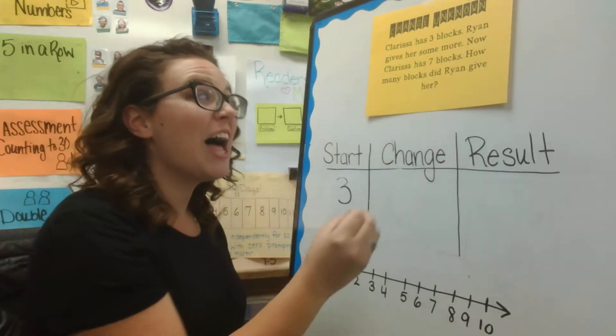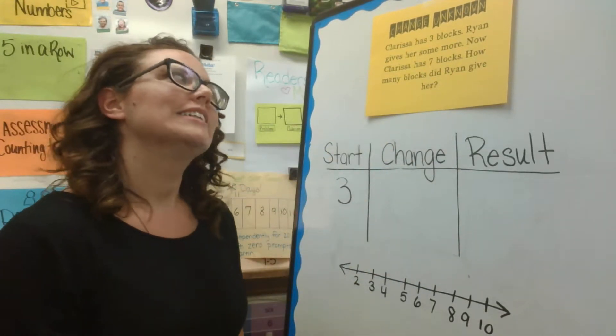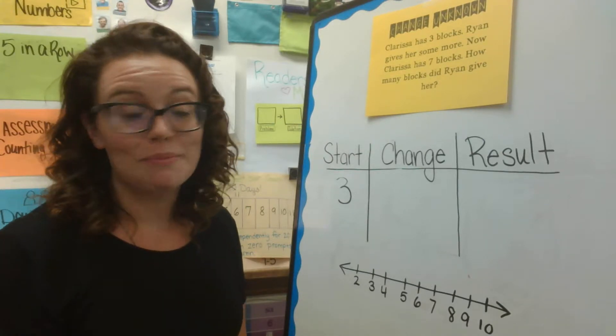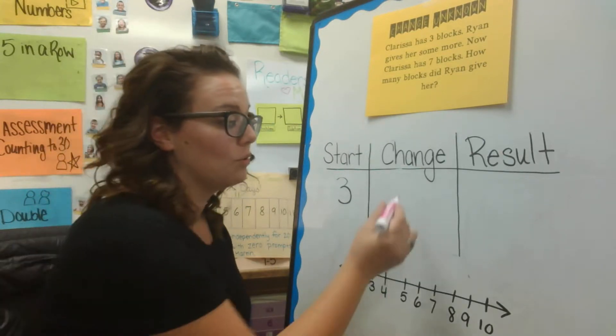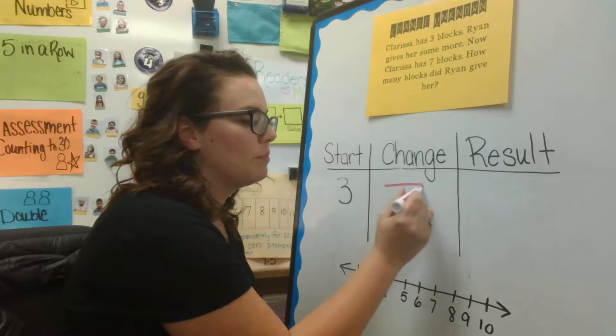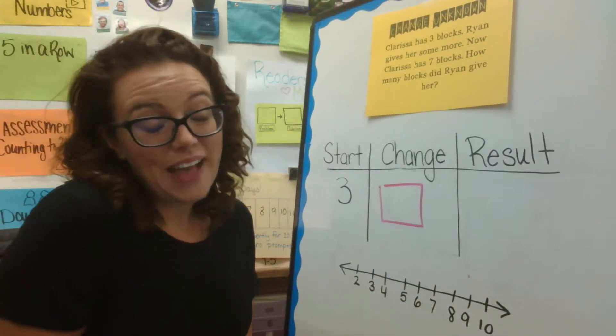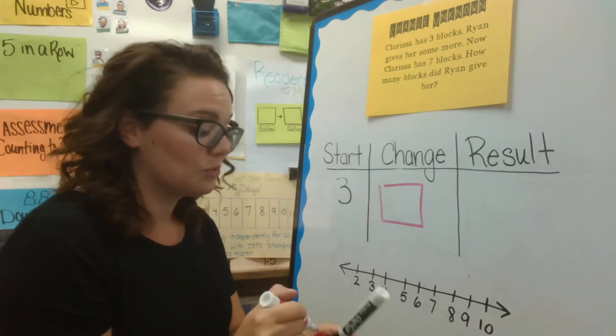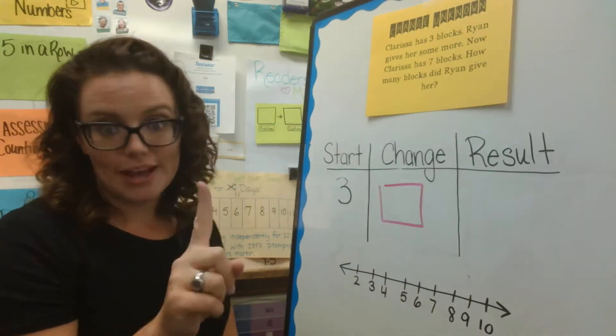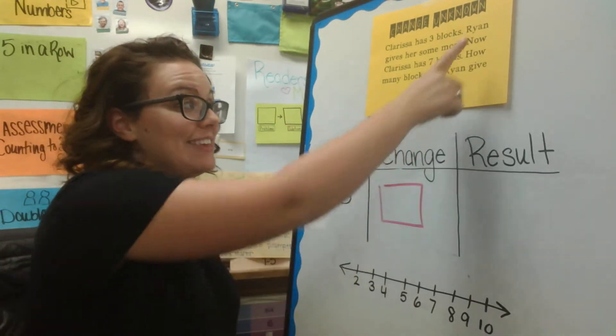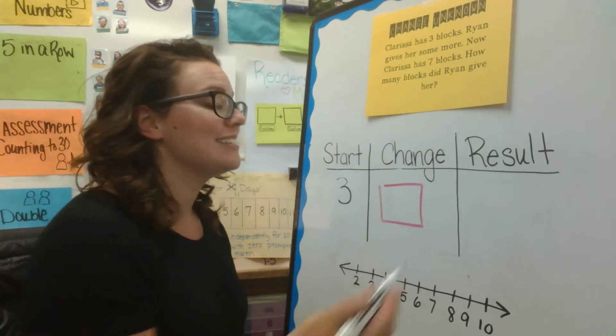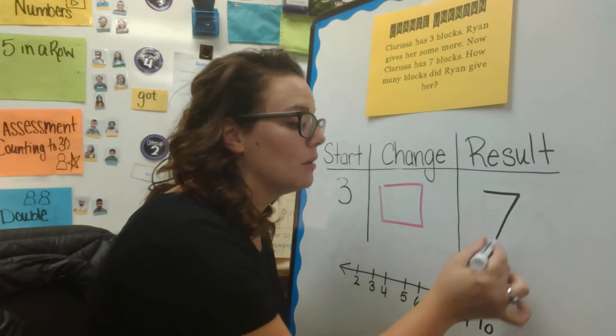Ryan gives her some more. I don't know how many some is. That's my unknown. So, I'm going to put a box here for my change because I don't know how many blocks Ryan gave Clarissa. But I do know that at the end of the story, Clarissa has seven blocks.